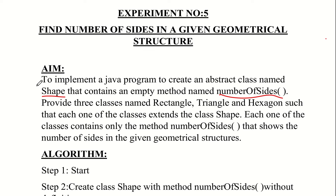A student raises a question about the abstract class. The abstract class is named Shape and contains an empty method named number of sides. We provide three classes named Rectangle, Triangle, and Hexagon — so there are four classes total including the abstract Shape class.